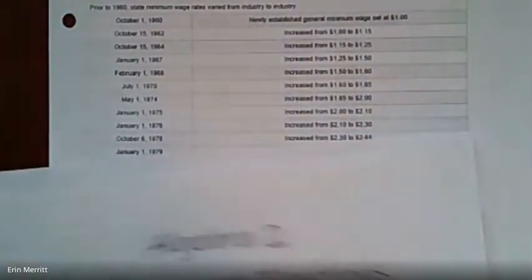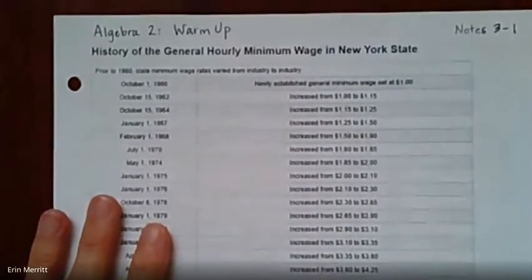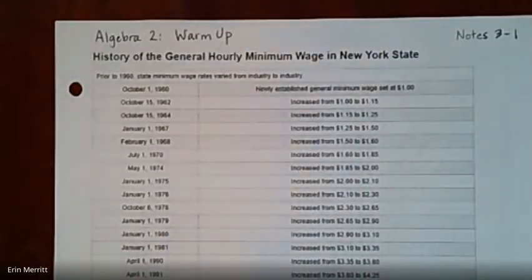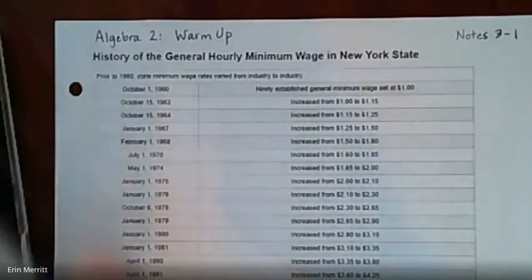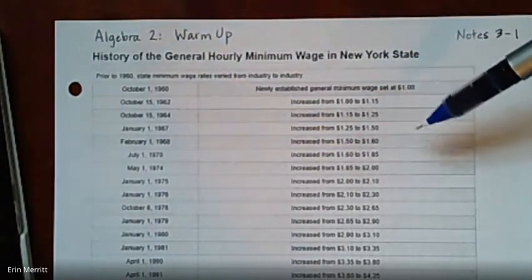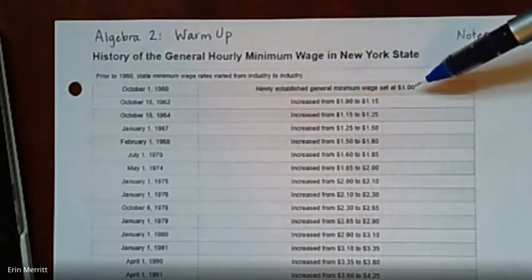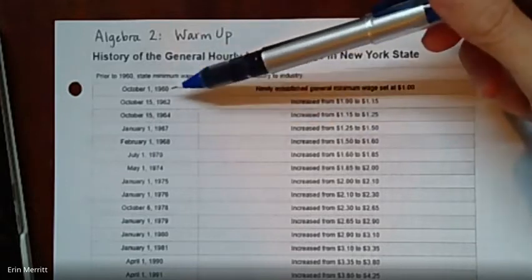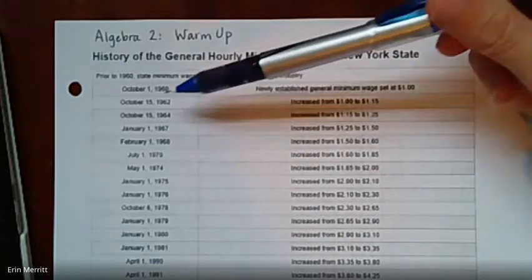Jumping right on into today. Talking about average rate of change. I like this first example. Just because it's actually really interesting to look at this data over the years. This is the history of the general hourly minimum wage in New York state. So different states, you know, maybe different rules. But New York state, so what you guys are familiar with in particular, right? So when you look at it, it's giving you the date and then what is the minimum amount people could be paid here? So starting back in 1960, it was established that a dollar an hour. That's what you're looking at. All right. And then it works its way through. It changes a couple of times in the sixties, but not by much, you know, a buck 15, a buck 25 and so on. Right.